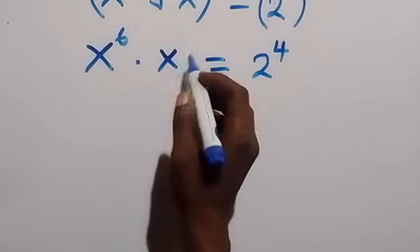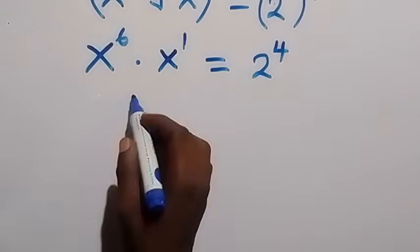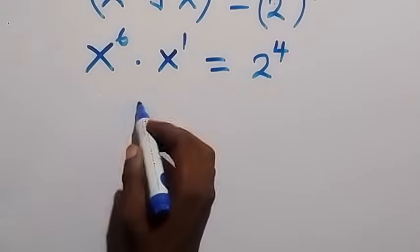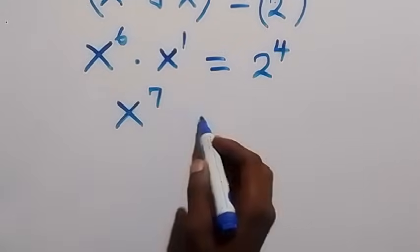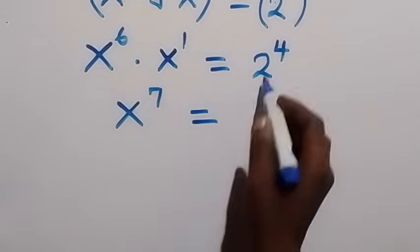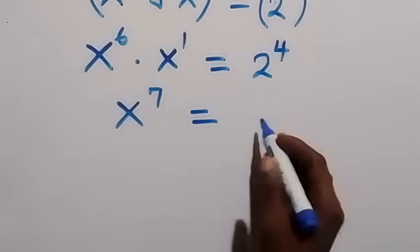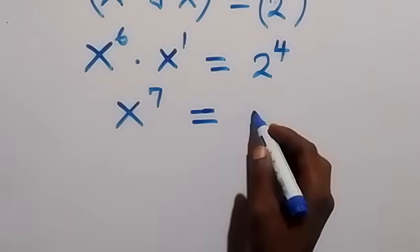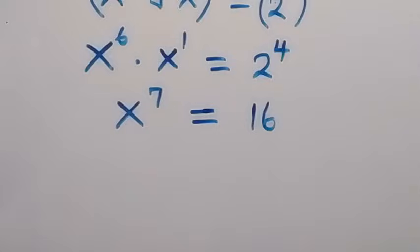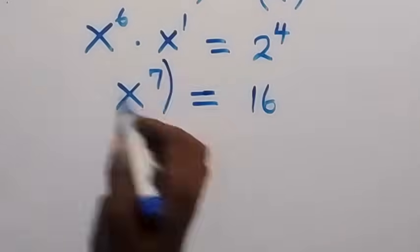In the next step we also have x raised to power 1 here, so from the law of indices this becomes x raised to power 7, which equals 2 raised to power 4. We can equally write that as 16, since 2 times 2 times 2 times 2 is 16.